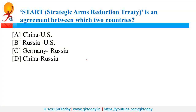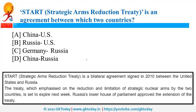START — that is Strategic Arms Reduction Treaty — is an agreement between USA and Russia. The name suggests it is a treaty to reduce nuclear arms. It is for the reduction and limitation of strategic nuclear arms by USA and Russia. Recently this treaty was about to expire, but it has been given an extension. This was signed in 2010.